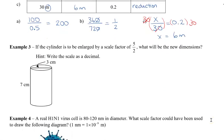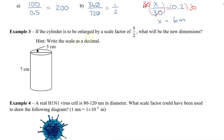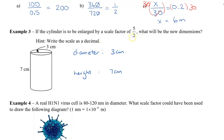Let's take a look at some applications of scale factor. Here we have a cylinder that is to be enlarged by a scale factor of 5 over 2. The question is: what will be the new dimensions? You can write this scale as a decimal or as a fraction. The diameter of the cylinder is 3 centimeters and the height is 7 centimeters, so we multiply each original dimension by 5 over 2 to get the new dimensions.